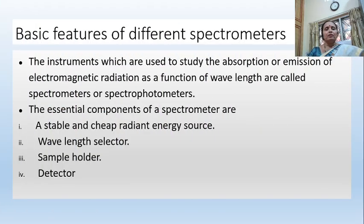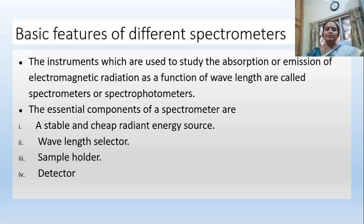Coming to the basic features of different spectrometers, let us know what is a spectrometer or a spectrophotometer. Instruments which are used to study the absorption or emission of electromagnetic radiation as a function of wavelength are called spectrometers or spectrophotometers.